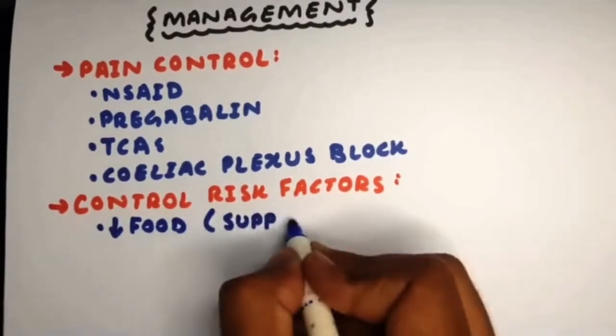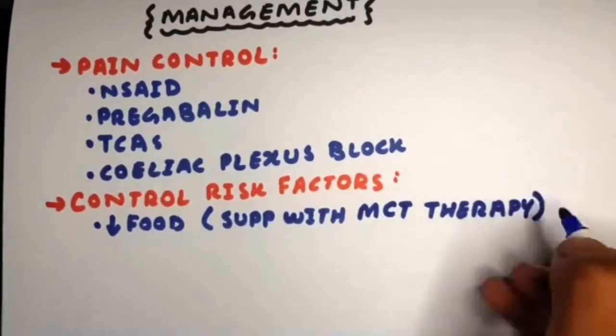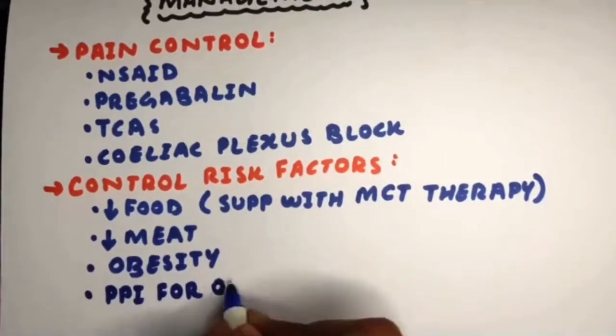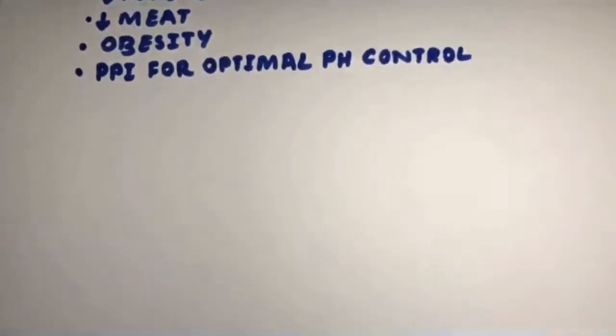We control risk factors by decreasing food intake but supplementing with medium-chain triglyceride therapy, decreasing meat intake, controlling obesity, and using PPIs for pH control.